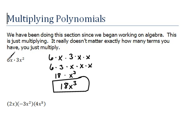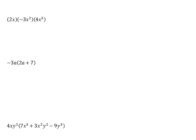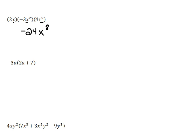Can you see that you just multiply the number parts and the letter parts? Once you see that, it becomes much, much easier. So let's look at this next problem using that shortcut. We'd multiply the number parts, which are 2 times negative 3 times 4, which is negative 24. And then we would multiply our letter parts: x times x squared times x to the 5th — we'd have to add the exponents to get x to the 8th. So our answer is negative 24x to the 8th.